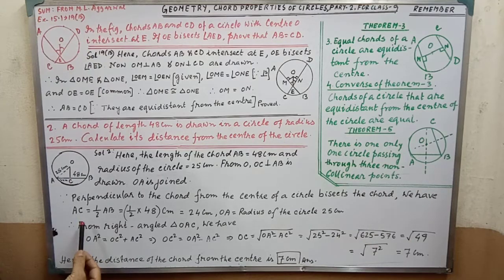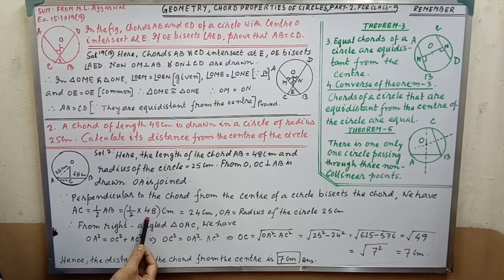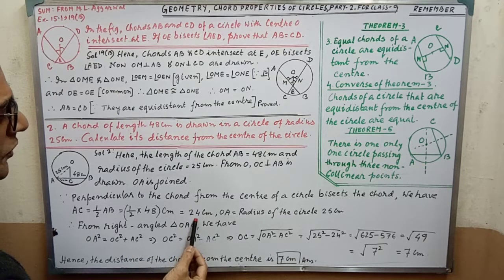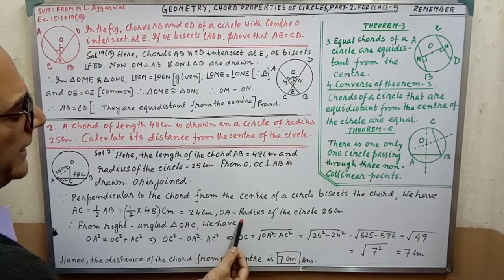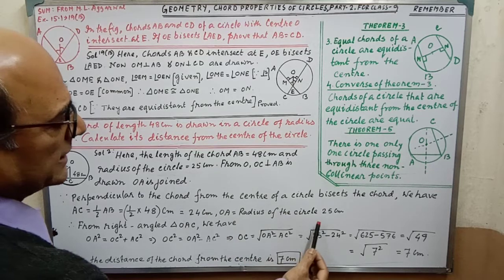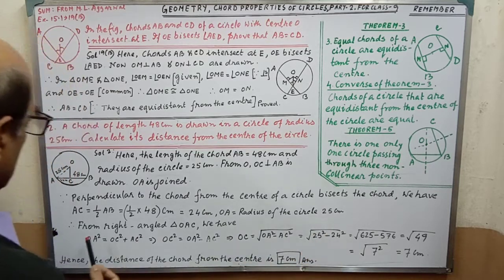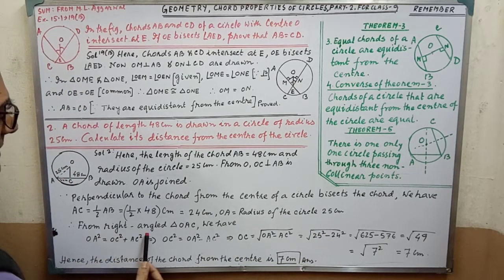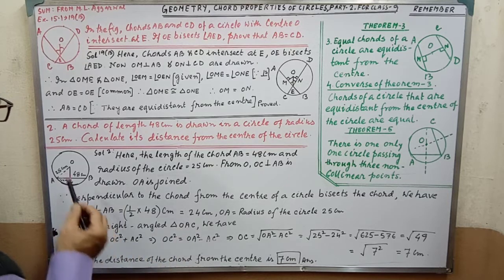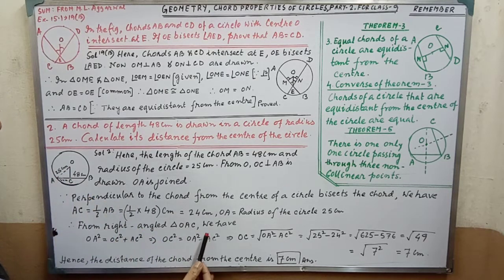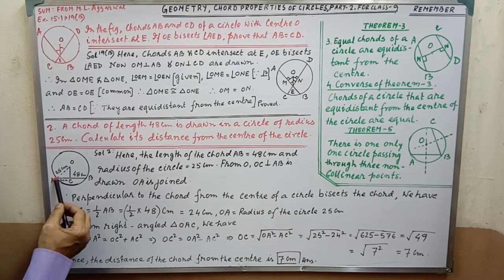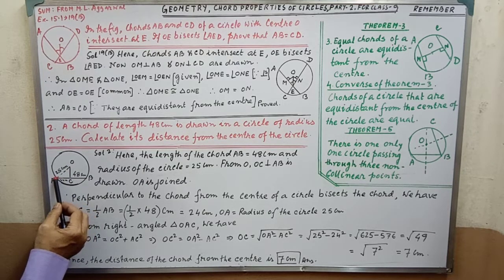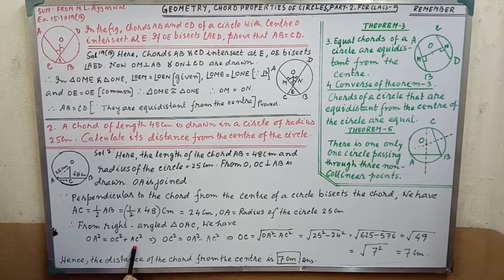Now, bisect the chord. We have, therefore, AC equal to half AB. Length of AB, that is 48. By calculation, we are getting 24 cm. OA equal to radius of the circle, that is 25 cm. Now, from the right angle triangle OAC, we have OA square, that is hypotenuse square, equal to perpendicular square plus base square. So OC square plus AC square.